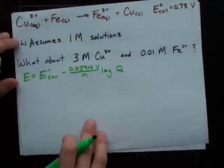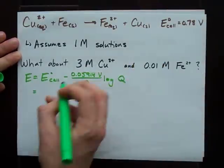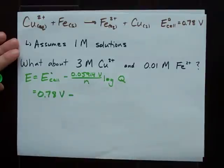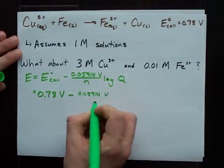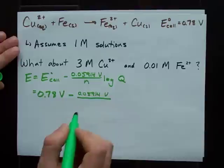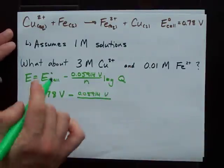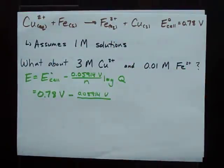So, what do I need to fill in for my values? Well, E naught cell is what you found before. 0.78 volts minus 0.05914 volts divided by N. N was the number of electrons swapped in the reaction. It's probably pretty clear from here that it was 2 electrons.